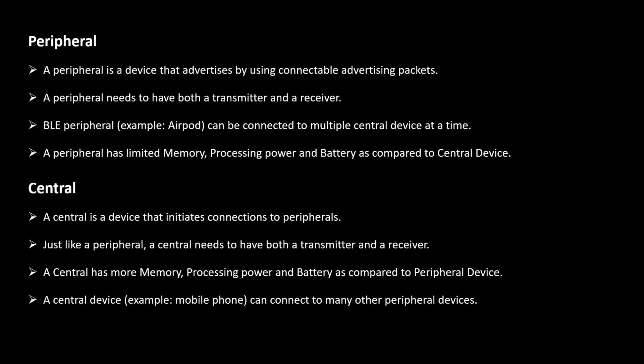A peripheral has limited memory, processing power, and battery compared to a central device. A central is a device that initiates a connection to a peripheral — similar to an observer but capable of sending connection requests. Like a peripheral, a central also needs both a transmitter and receiver. A central has more memory, processing power, and battery than a peripheral. A central device can connect to many peripheral devices. Examples include mobile phones, BeagleBone, and Raspberry Pi processors.